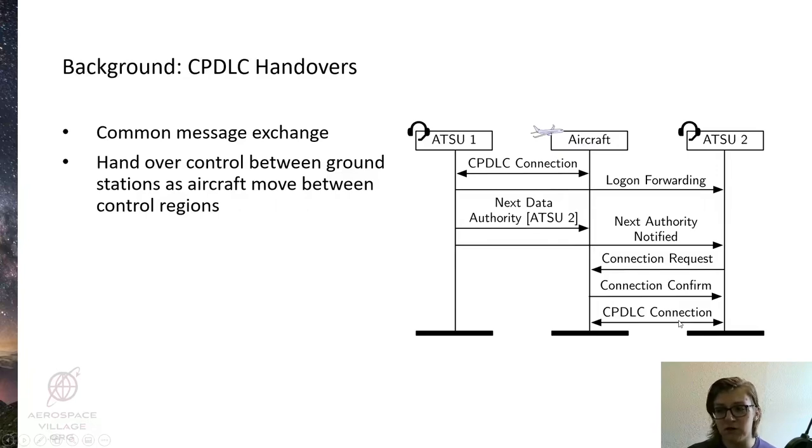First logon forwarding message is sent between the ground stations, and then a next data authority message is sent to the aircraft, indicating the identifier of the new ATSU that it should connect to.